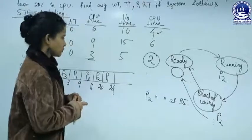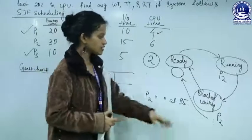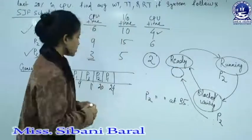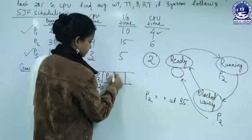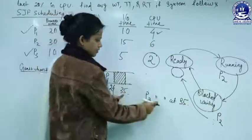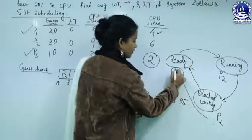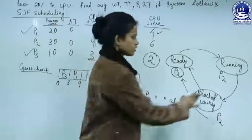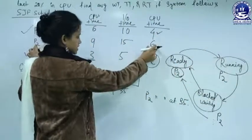From time 24 to 35, there are no processes in the ready state — only P2 in the blocked state. So the CPU remains idle for 11 milliseconds. At time 35, P2 arrives in the ready state. We assign P2 to the CPU for its last CPU time of 6 milliseconds: 35 + 6 = 41. P2 terminates at time 41.